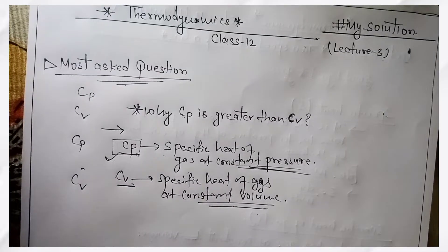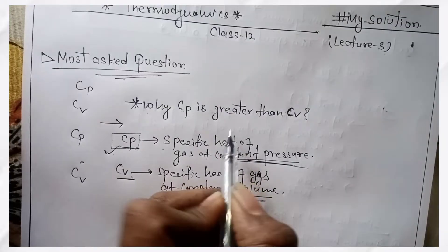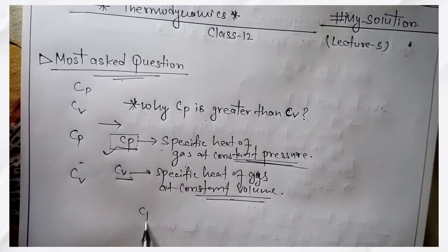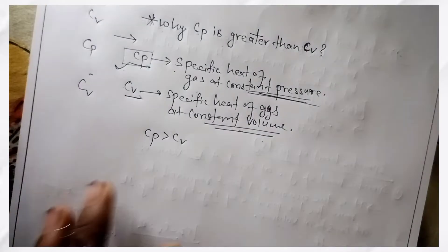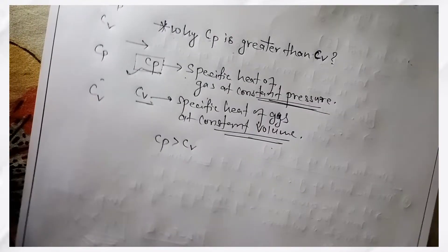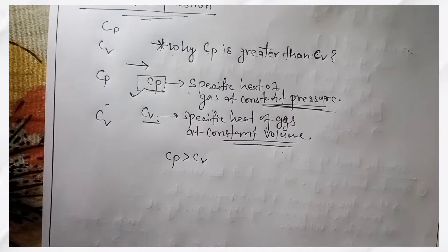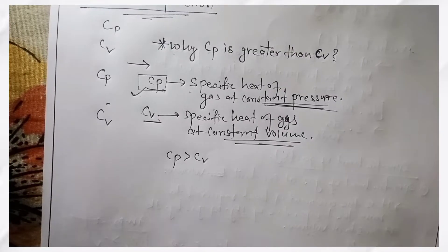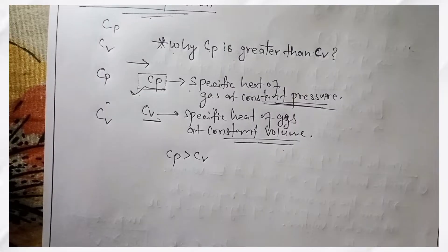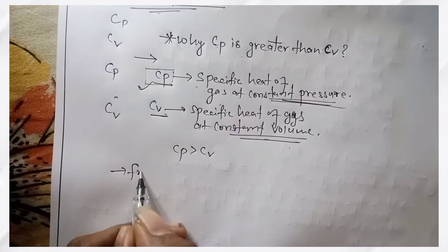The first question is: why is Cp greater than Cv? Cp is greater than Cv. To answer this, we involve work. This relates to the first law of thermodynamics, in mathematical form.